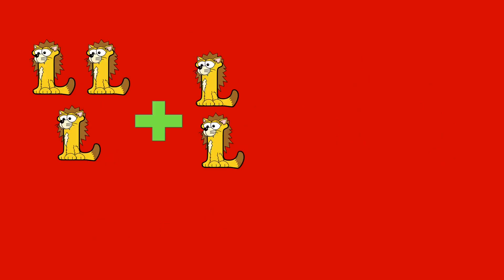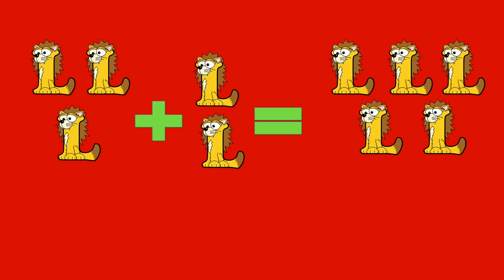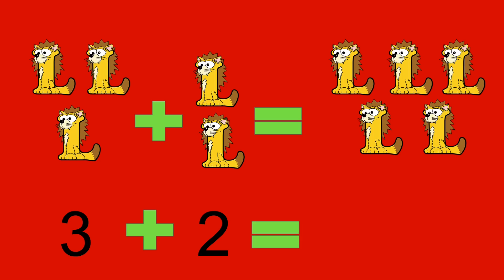3 lions plus 2 lions equals 5 lions. 3 plus 2 equals 5.